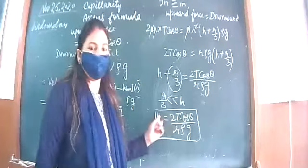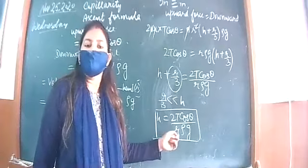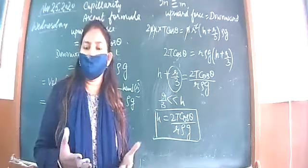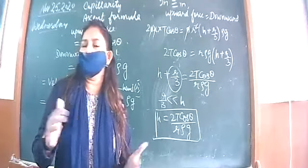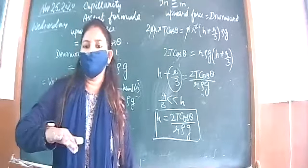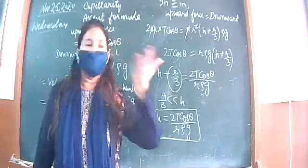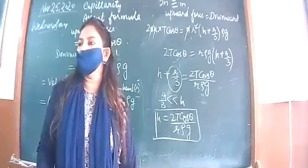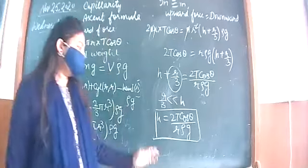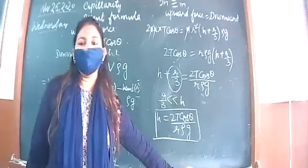The second result: height is inversely proportional to radius of the capillary tube. Liquid rises to a greater height in a narrow tube and to a lesser height in a broad container. So height is inversely proportional to the radius of the tube — the narrower the tube, the higher the liquid rises.